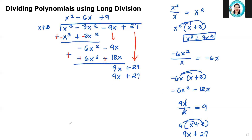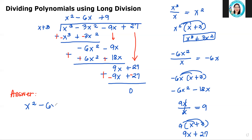Now let's proceed to subtraction. We will subtract this, and since there is subtraction, we change the sign of the subtrahend, and then proceed to addition. So 9x plus negative 9x is zero, and 27 plus negative 27 is also zero. So our answer is x squared minus 6x plus 9.